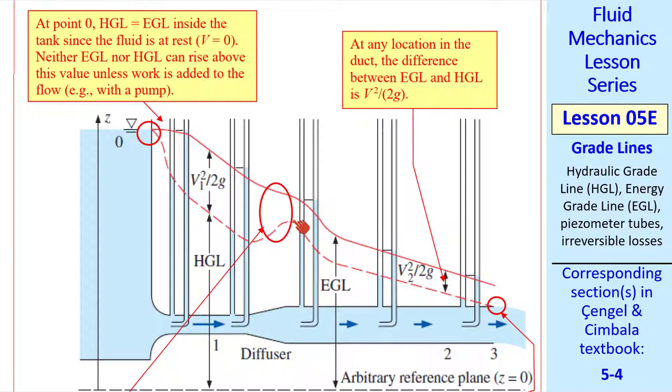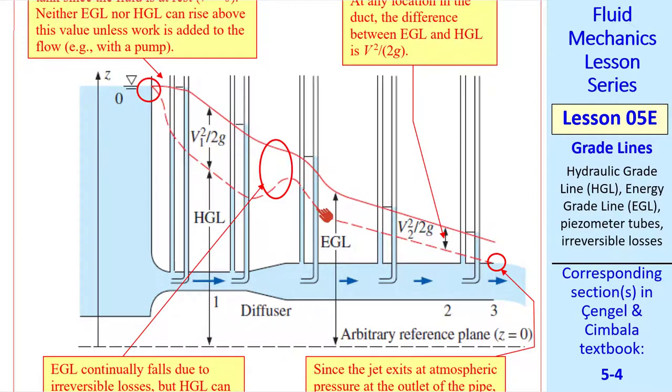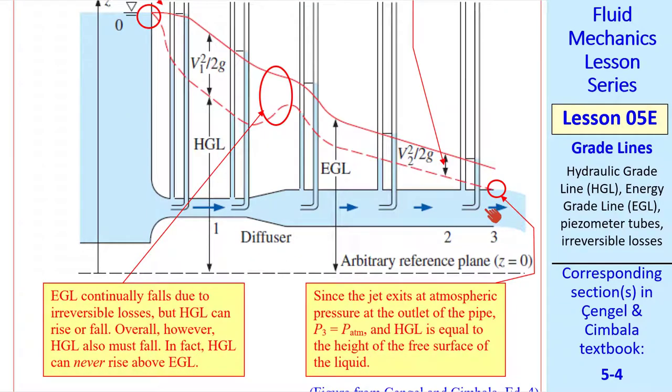Now we go through a diffuser. The HGL actually increases because the speed is going down to conserve mass. But the pressure increases, and there are irreversibilities, so the EGL continues to drop. At this location, the speed is lower than it was here. So the difference between EGL and HGL is smaller than it was here. Now we have a developing pipe flow situation, where both EGL and HGL drop rapidly at first, and then drop linearly with distance, since this is now fully developed. Finally, at the exit, since this is a jet exiting into the atmosphere, HGL is once again the same elevation as the fluid, since the pressure here is atmospheric, just as it was up here. The EGL is still higher by this amount, V2 squared over 2G, since this stagnation pressure probe feels the full impact of the flow, even at the exit plane.